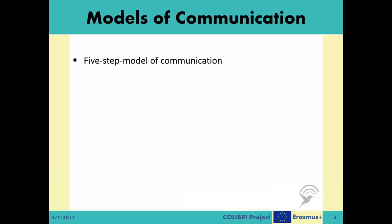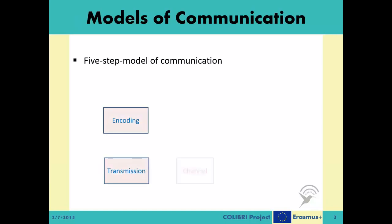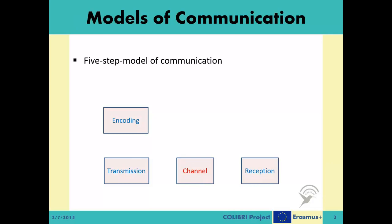Let us begin with defining a generic model for communication, to which many communication systems conform. Make no mistake — this model is not the only model available for defining communication systems, just one of the most used ones. In this generic five-step model, the system is divided into five main steps: encoding, transmission, channel, reception, and finally, decoding.